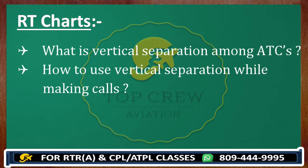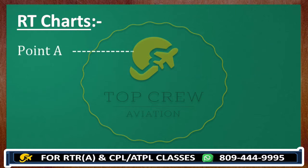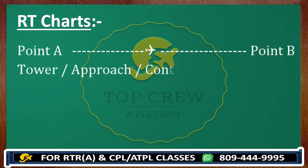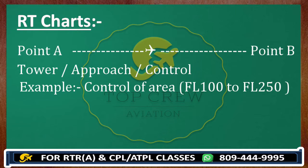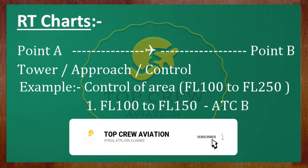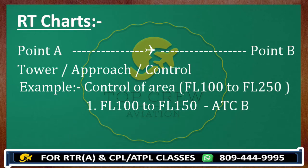Let me repeat again — we are going to understand about vertical separation. As the term suggests, vertical separation. Let me give you an idea. From point A to B, we have already separated areas like tower, approach, and control. Now, let's say your control area is from flight level 100 to flight level 250. That is the control area of any ATC on any aerodrome. If we divide that control area with two ATCs — let's say from flight level 100 to flight level 150 with ATC B, and from flight level 150 to flight level 250 would be dealt by ATC D or anyone.